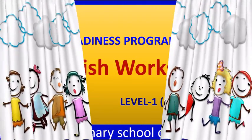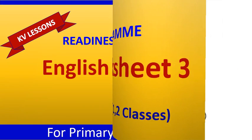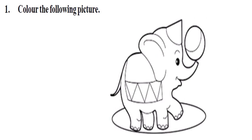Hi children, today I am going to explain English Worksheet 3, Level 1 for classes 1 to 2. Children, what is this picture? It is an elephant. Do you like to color the pictures? Okay, color this picture.